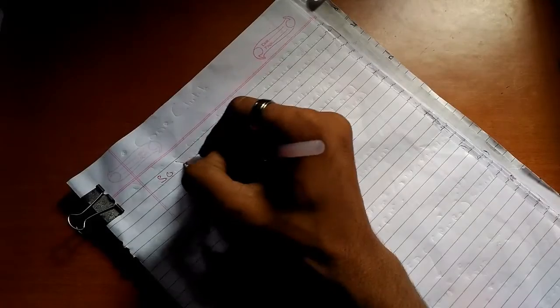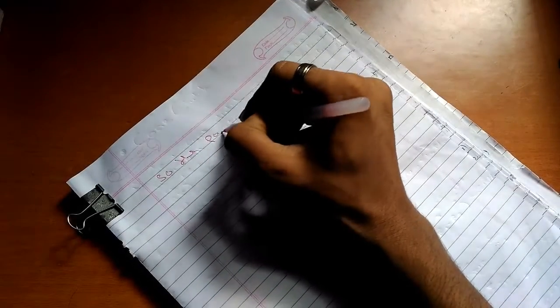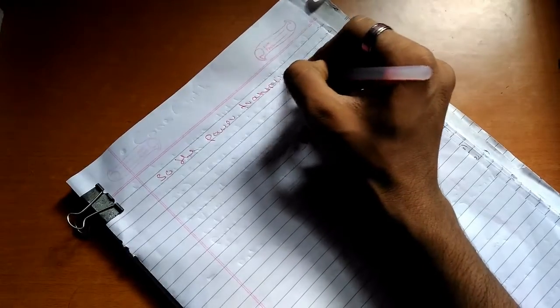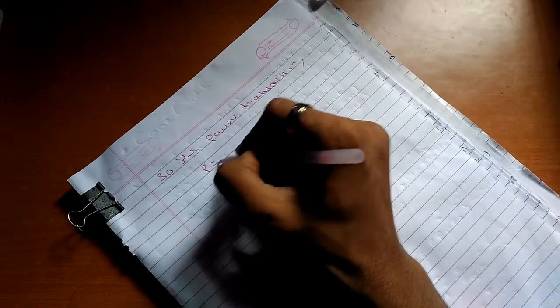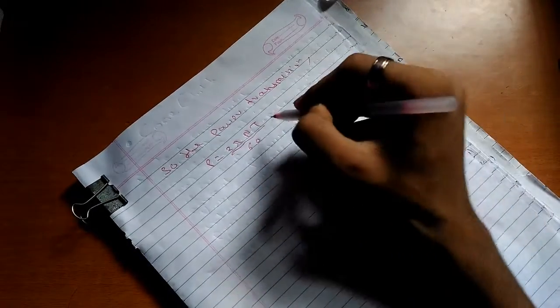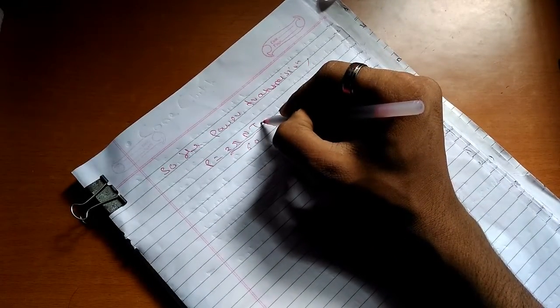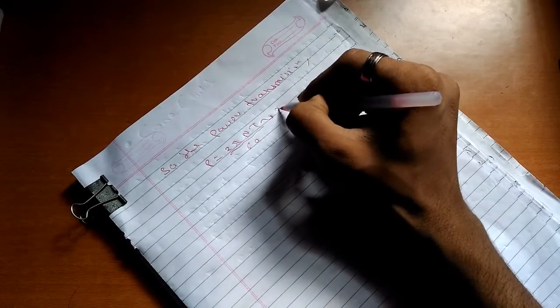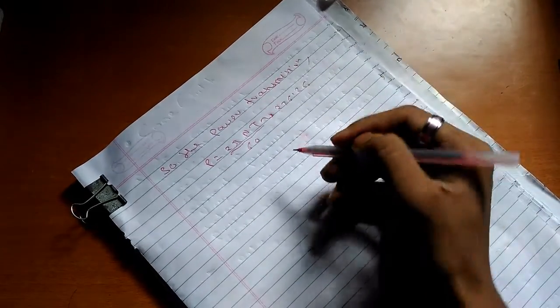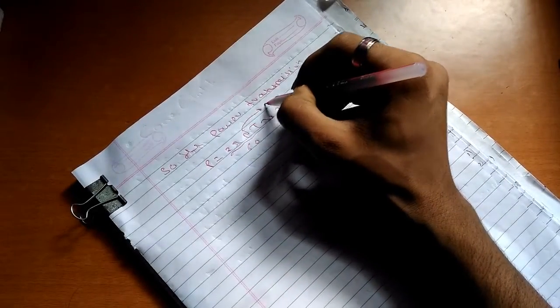Now we need to calculate the power transmitted. The power transmission can be written as power equals 2πnT divided by 60. Since we have calculated T as 276.26 and n is 1000.